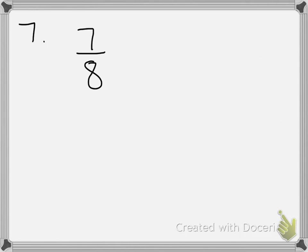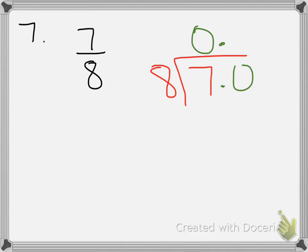For number 7, they give you the fraction 7/8 and ask you to write it as a decimal. We're going from fraction to decimal, and since 8 isn't compatible with 100, we have to do it the long way — dividing 7 by 8. We know right away the answer has to be zero-point-something, because a fraction by definition is less than one. So you put 0. and start the long division.